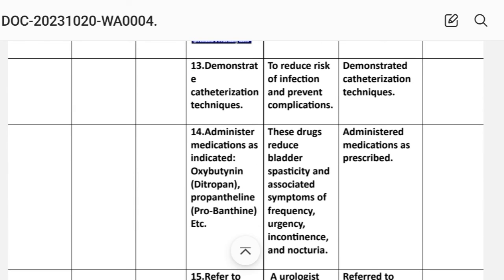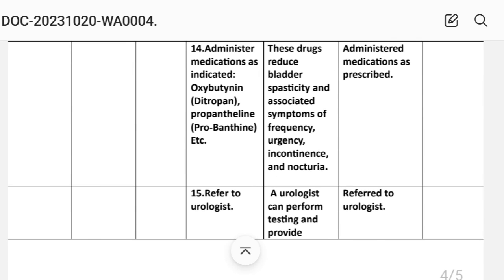Intervention 13: Demonstrate catheterization technique to reduce risk of infection and prevent complications. Implementation: Catheterization technique demonstrated. Intervention 14: Administer medications as indicated — Oxybutynin (Ditropan), Propantheline (Pro-Banthine), etc. Rationale: These drugs reduce bladder spasticity and associated symptoms of frequency, urgency, incontinence, and nocturia. Implementation: Medications administered as prescribed.